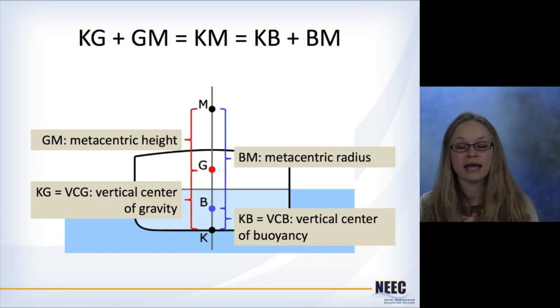GM is the metacentric height. KG is the vertical center of gravity. BM is the metacentric radius. KB is the vertical center of buoyancy. And then the total distance between the keel, the bottom of the ship, and M which is the metacenter we creatively call KM.